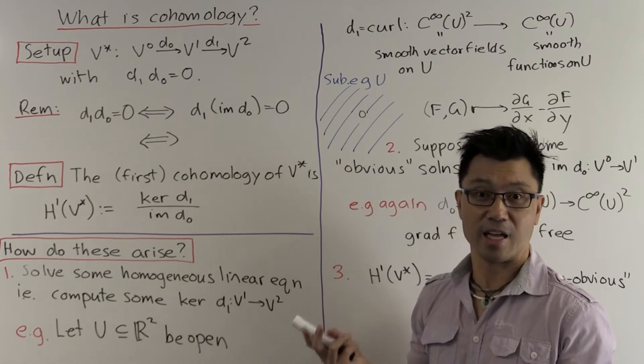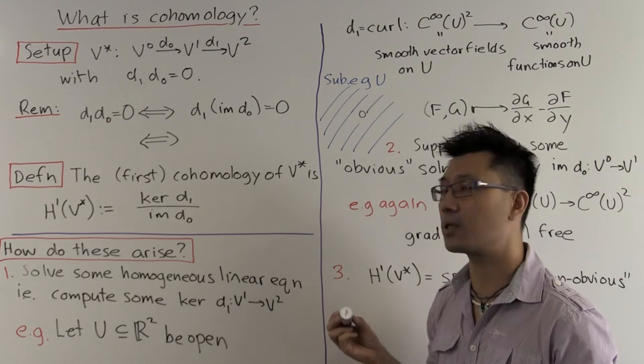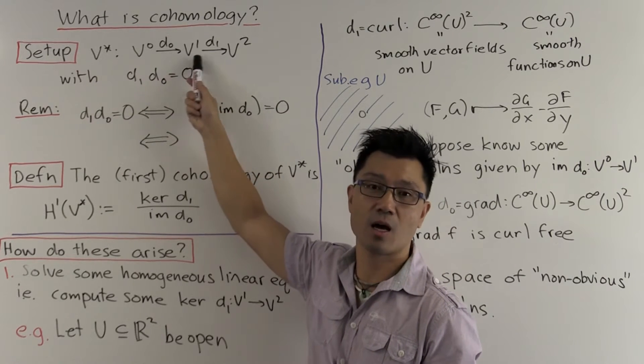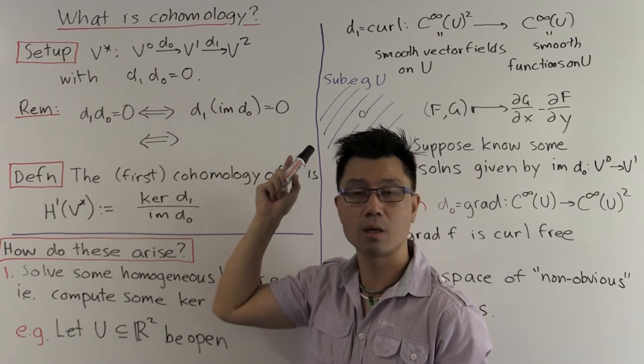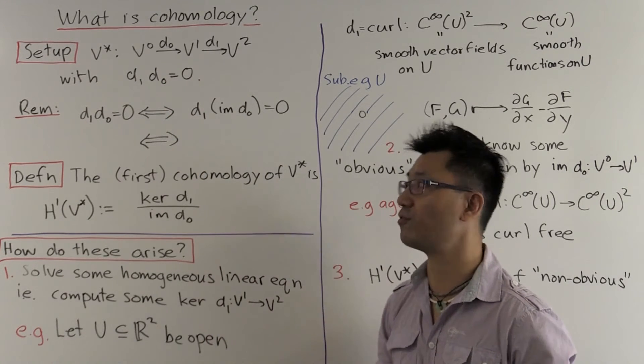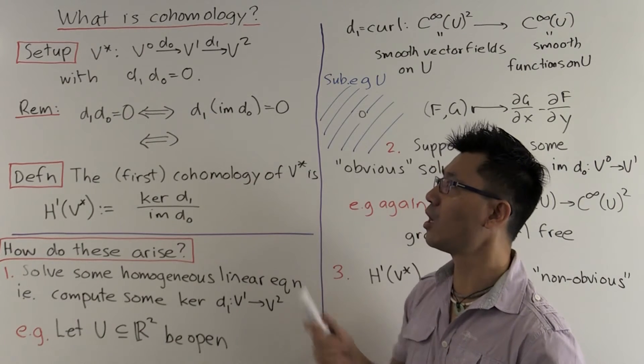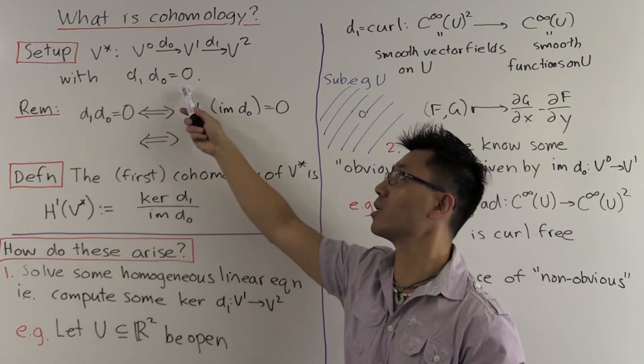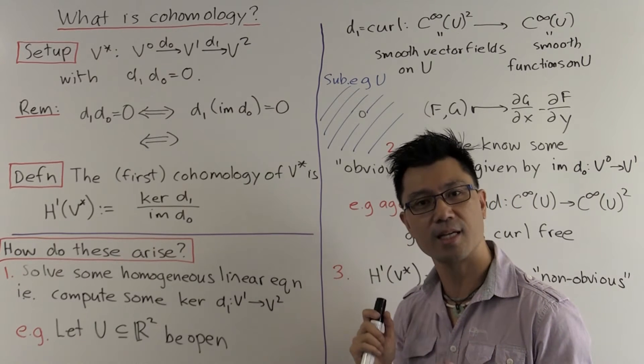Now today, just for simplicity, we'll look at vector spaces, but you can also consider more generally the case where these Vs are just abelian groups and the maps D0 and D1 are additive maps. So you may not have seen this condition D1 D0 equals zero before, so let's study it a little bit.